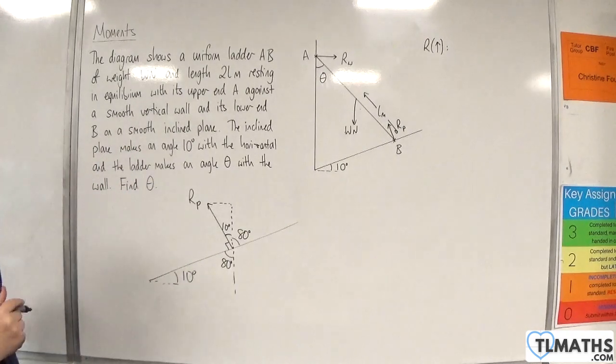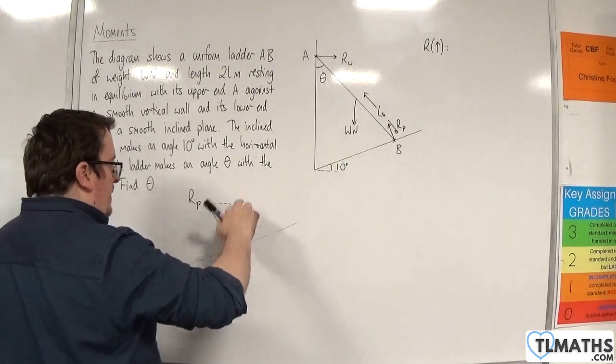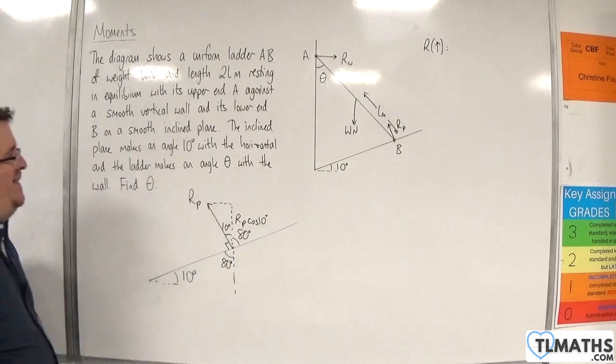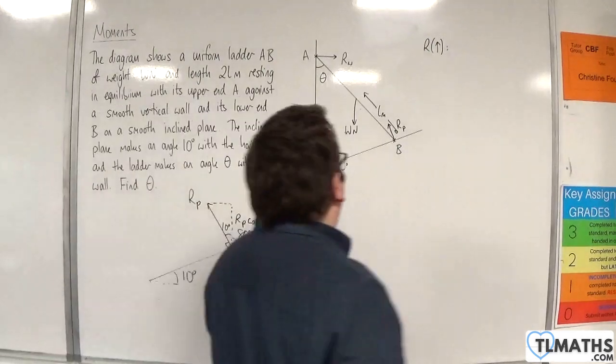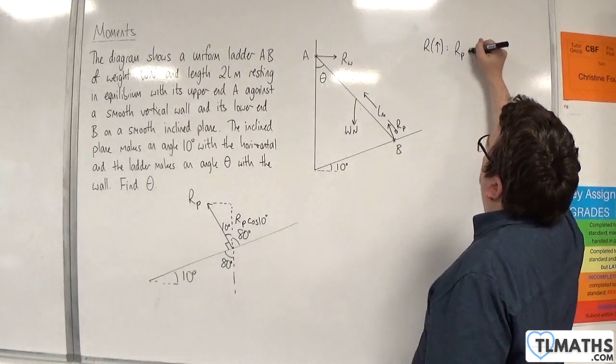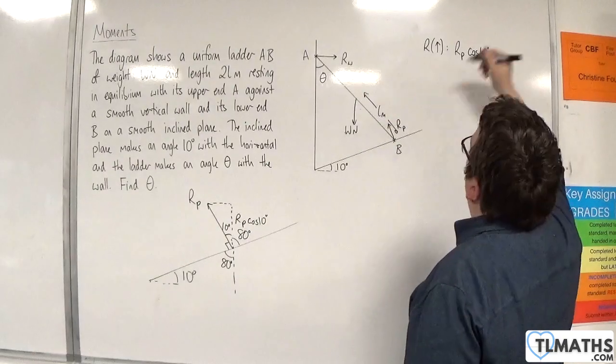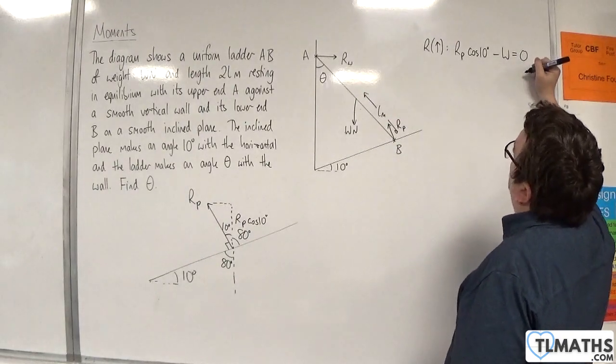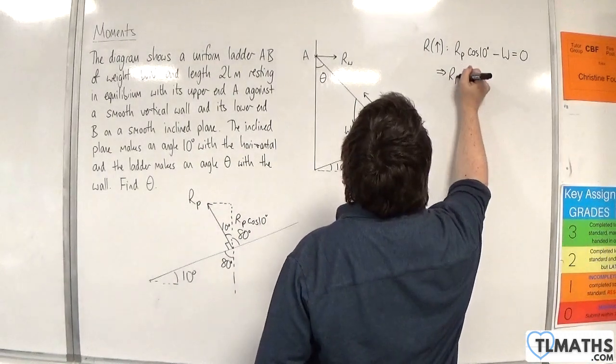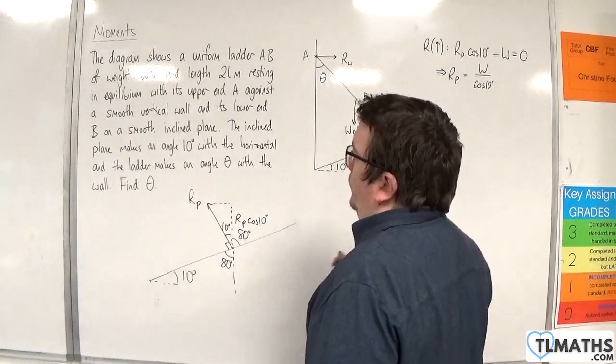So that's proved to myself that that angle's going to have to be 10 degrees. So, this side here would be RP cosine 10 degrees. So resolving vertically, we're going to have RP cosine 10 degrees going upwards. And we've got the W newtons force working downwards, and that's got to be equal to 0. So RP would have to be equal to W over cosine of 10 degrees.